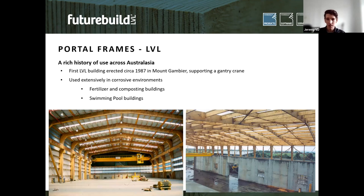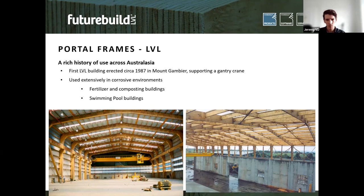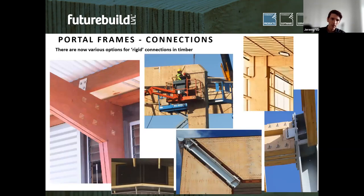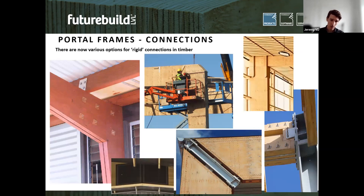LVL portal frames are not new to Australasia — the first known example was around 1987 in Mount Gambier, which also had a gantry crane. They've been used extensively across Australasia since then in all sorts of building applications. Notably, anywhere a level of corrosion resistance is required — swimming pools, fertiliser buildings, composting buildings — timber is low-hanging fruit because LVL is inert to most acids and alkalis within a pH range of about 2 to 10.